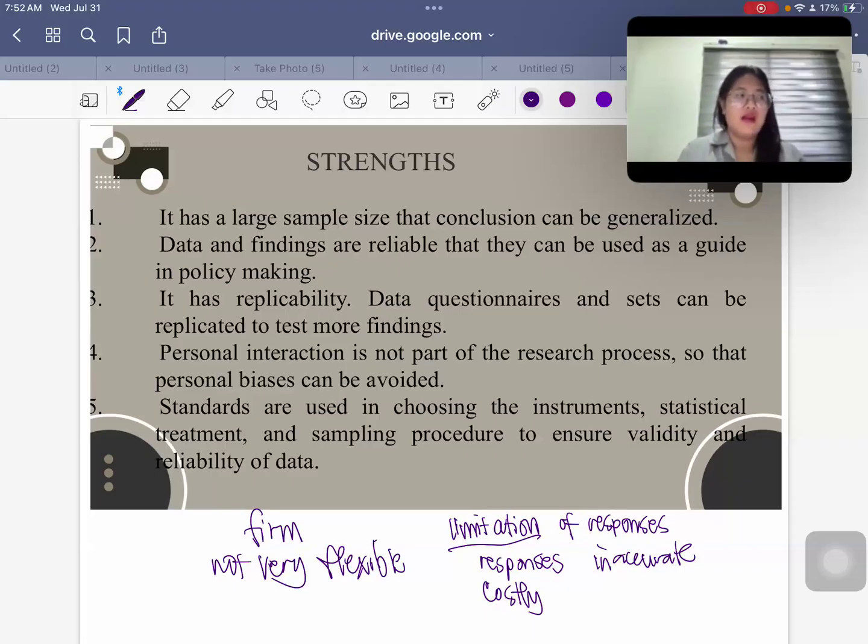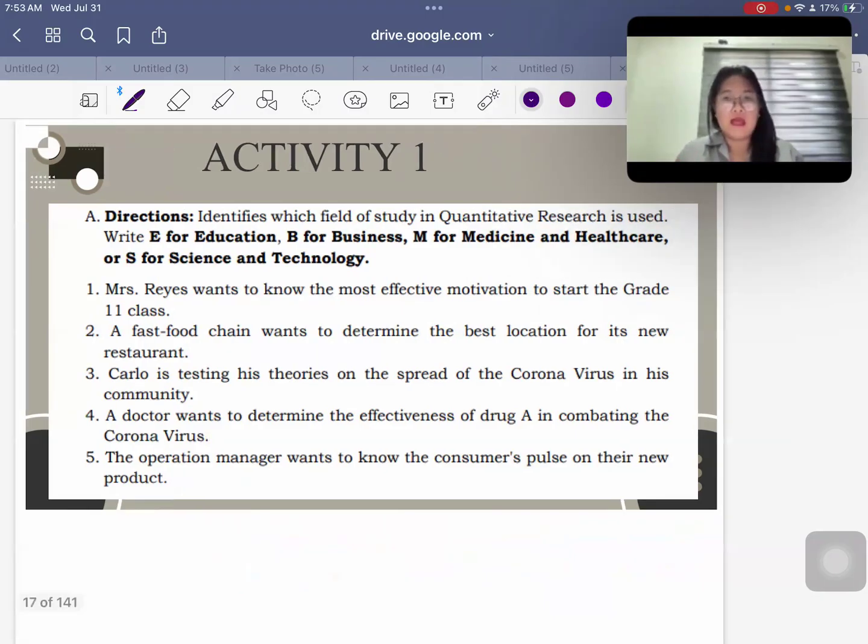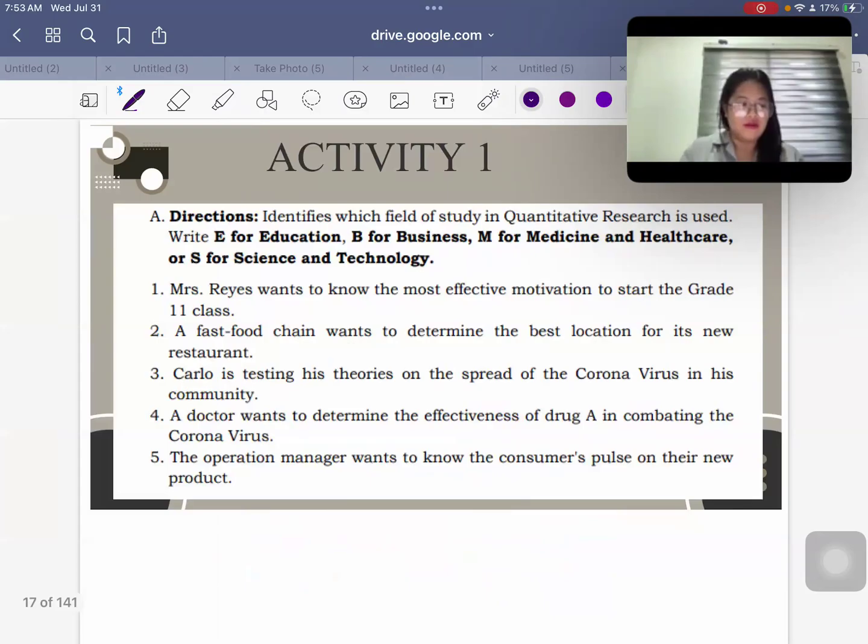But every research type would also have their beauty. So a topic would necessitate a particular research type and research design. And we have to be really critical what is fitting for that particular topic. So with that, for us to check, try and answer the following using your bond paper. So I'm going to give you a few moments to screenshot this one.